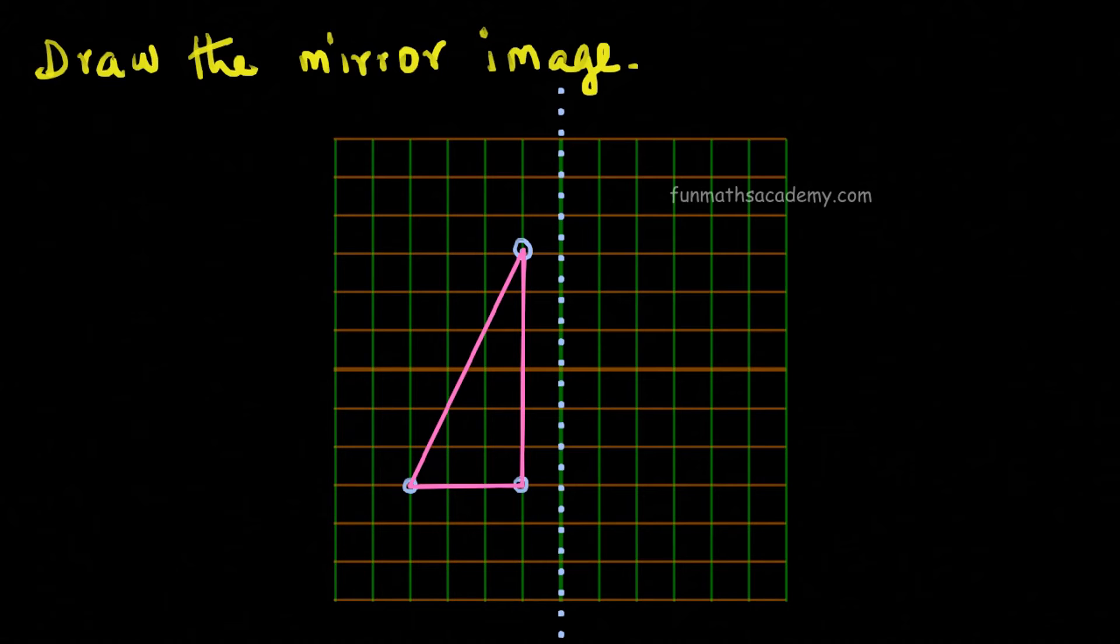But where to mark all these corners? First, draw a line from this point which is perpendicular to the mirror line.